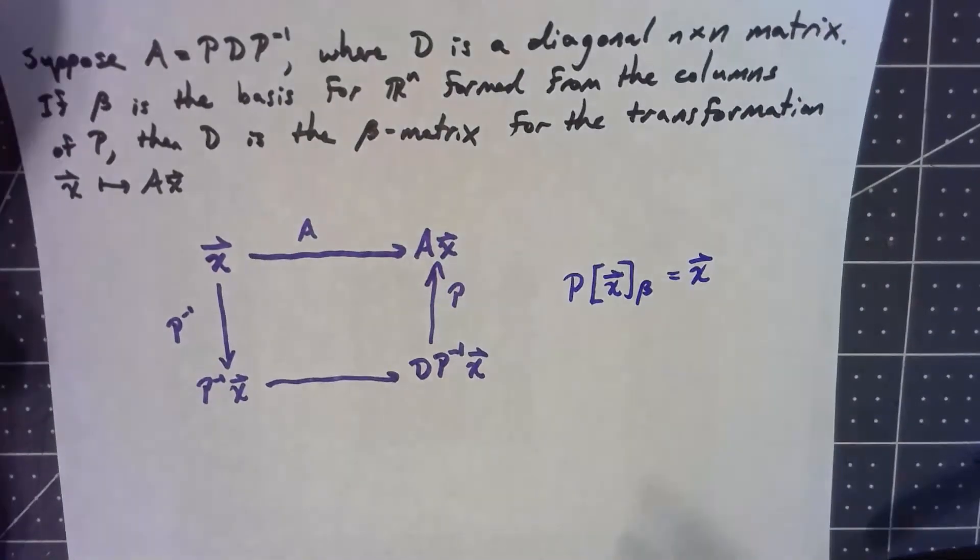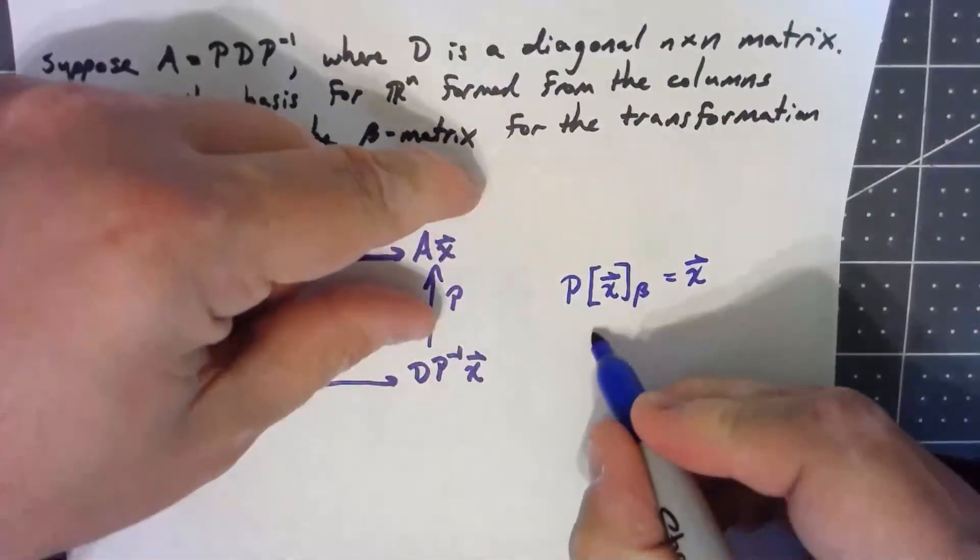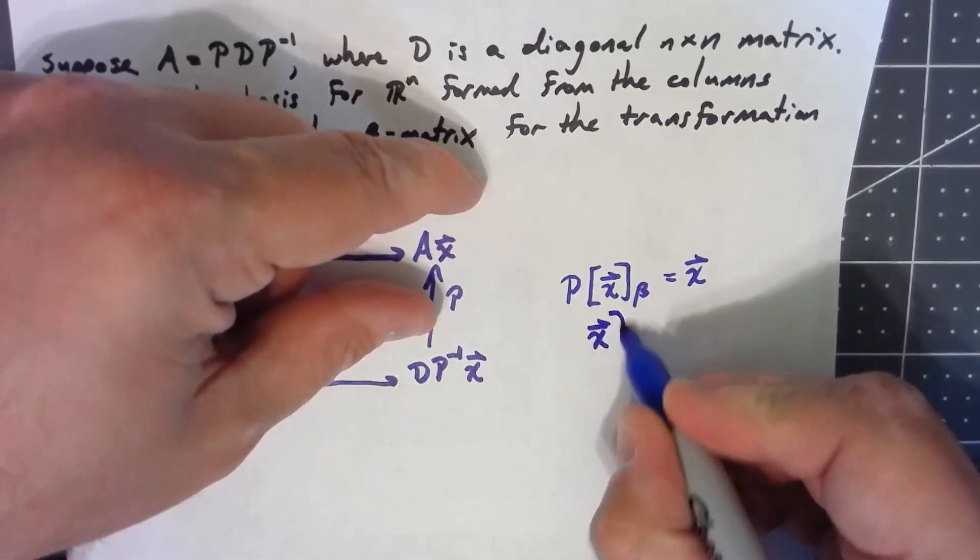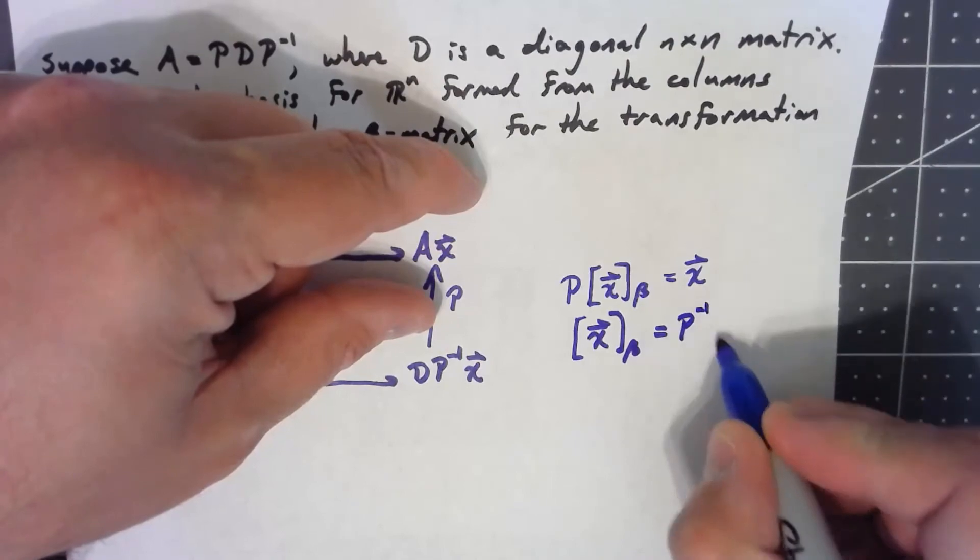Okay. Well, that means, if I take this and multiply both sides by P inverse, that means that the x vector, the coordinates for it, are P inverse times x.